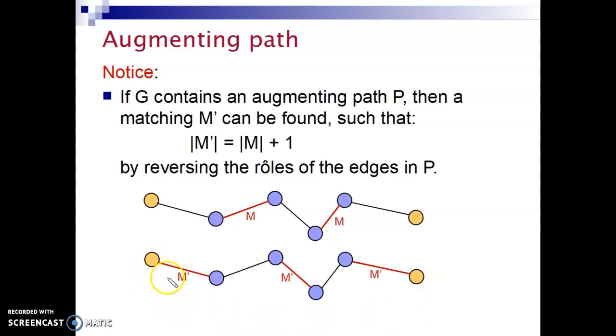And we continue like this and finally obtain the second path. And in the second path, the edge here, here and here. Three edges belong to the new matching, which we named M prime. And this new matching has one more edge than the previous one.